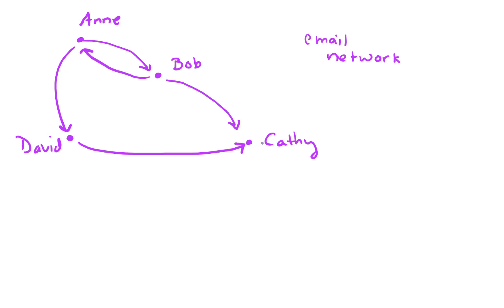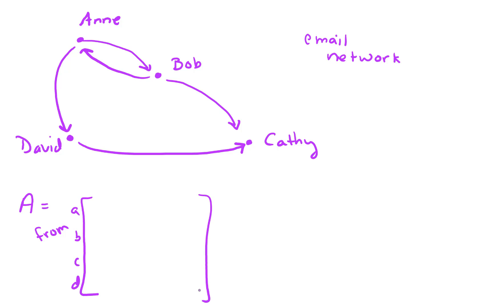So we could encode this information in a matrix. I'm going to organize my matrix as follows: I'm going to have rows for A, B, C, and D, and along the columns I'm also going to have A, B, C, and D.